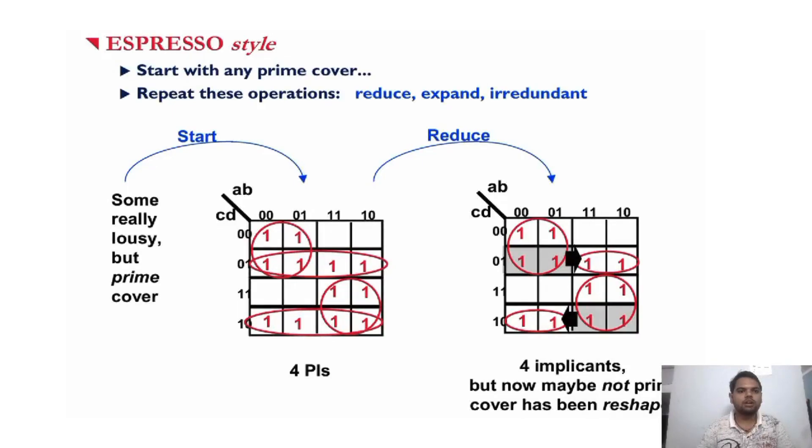Now I will show how Espresso works. First, start with any prime cover. Then repeat the operations: reduce, expand, and irredundant. In the first step, we start with four prime literals: first one, second one, third one, and fourth one.